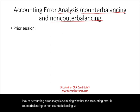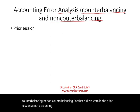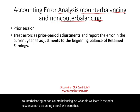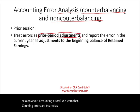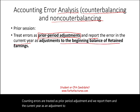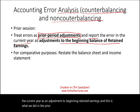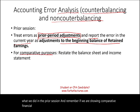So what did we learn in the prior session about accounting errors? We learned that accounting errors are treated as prior period adjustments, and we report them in the current year as an adjustment to beginning retained earnings. And if we are showing comparative financial statements, we have to restate — we have to go back and correct the error in that particular year.